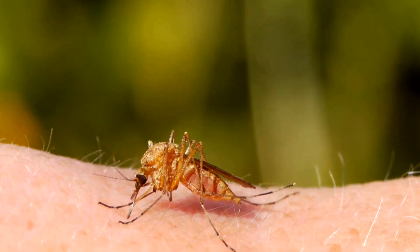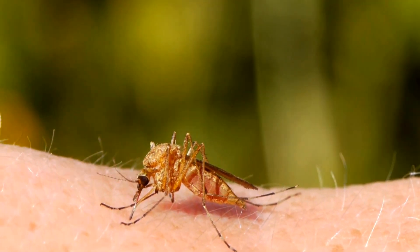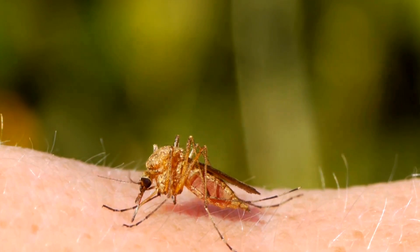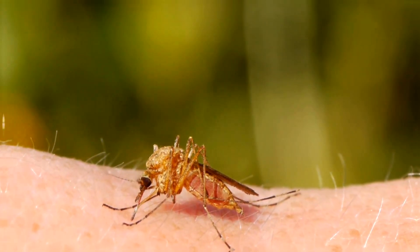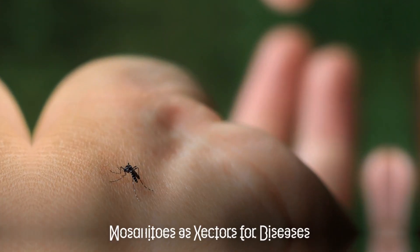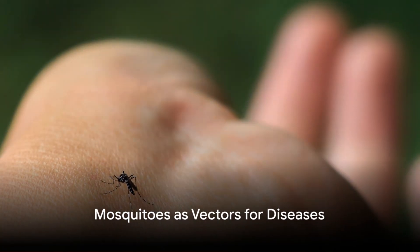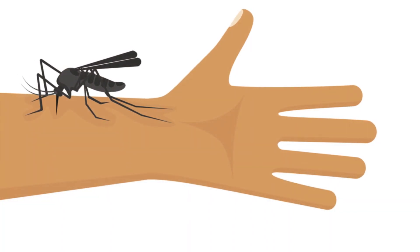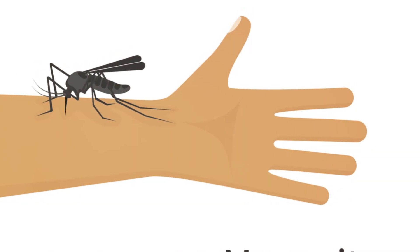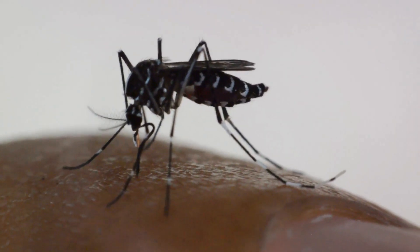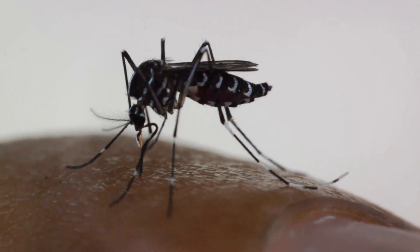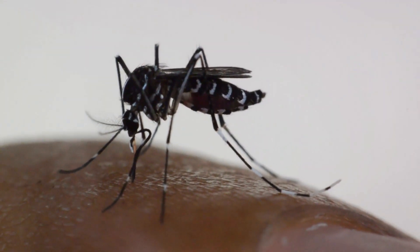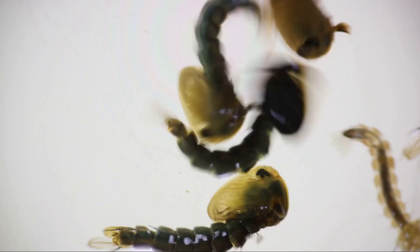These winged assassins, despite their size, carry a lethal arsenal of diseases that pose a significant threat to humans worldwide. Our journey begins by understanding how mosquitoes are vectors, or carriers, for diseases. They become infected when they feed on a host that carries the disease-causing virus or parasite.